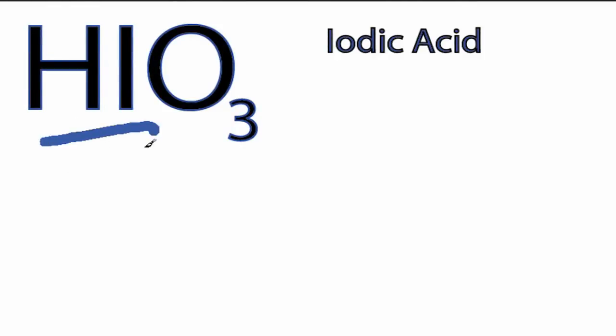So to draw the Lewis structure for HIO3, iodic acid, we need to realize that this is an acid, and we can tell that because there's a hydrogen in front. And whenever we have that hydrogen in front, that means when we draw our Lewis structure, we're going to put it on the outside of one of the oxygens.